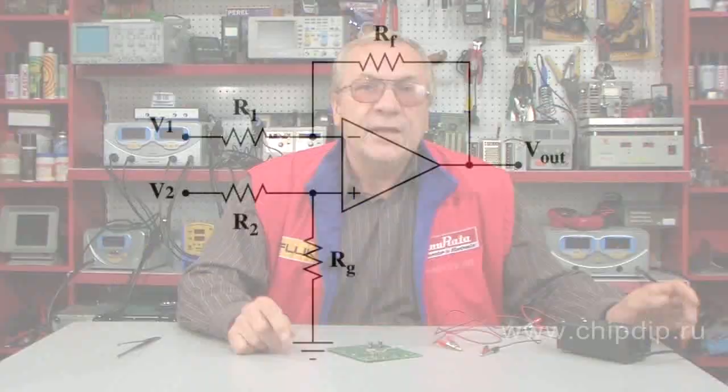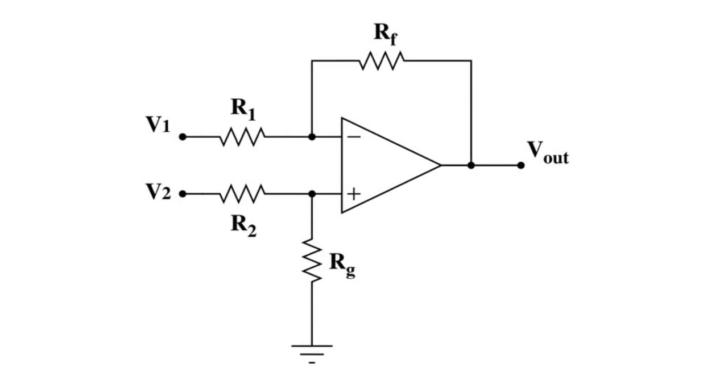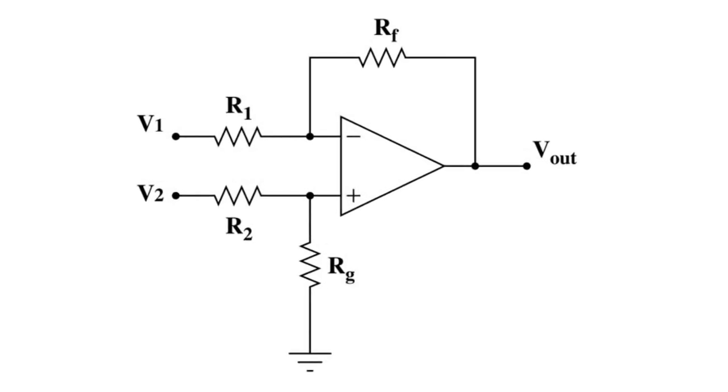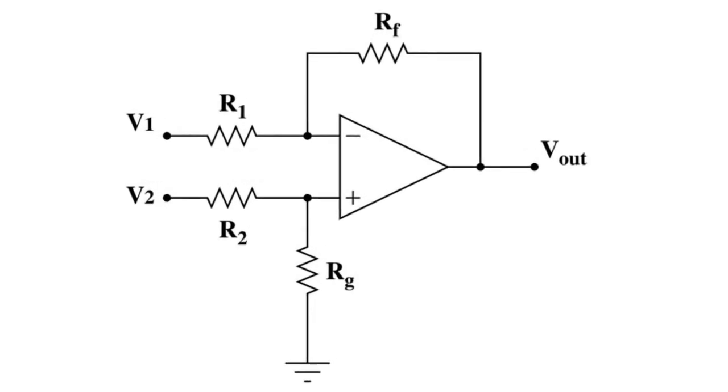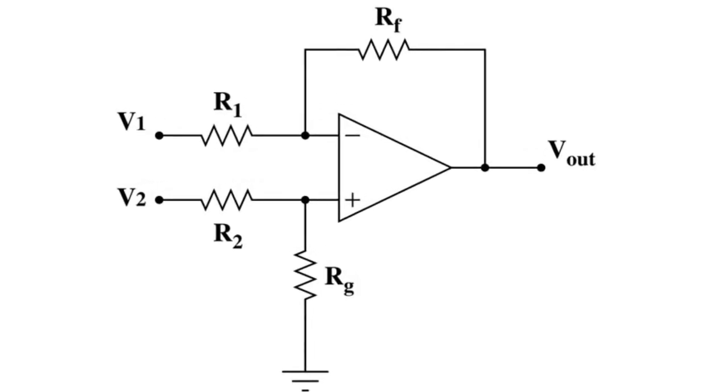When the signal levels at both inputs change simultaneously, such an input signal change is called an in-phase change. A differential amplifier has a high in-phase signal attenuation coefficient.